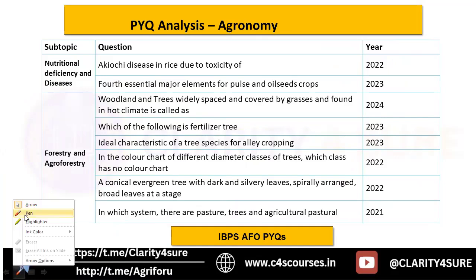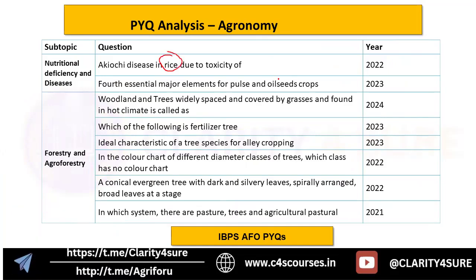For nutrient disorders and deficiencies, only two questions have been asked, both related to rice and pulse and oilseed crops. This again confirms the importance of rice and pulse and oilseed crops throughout the exam.